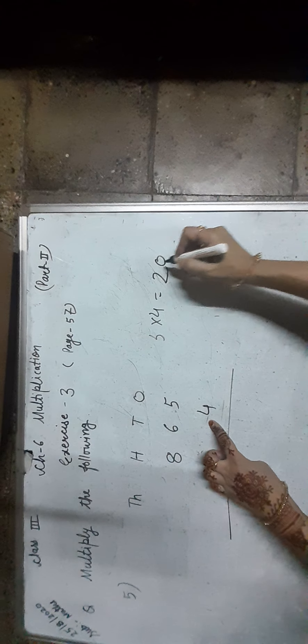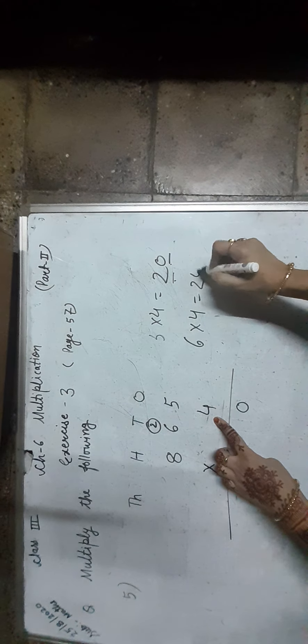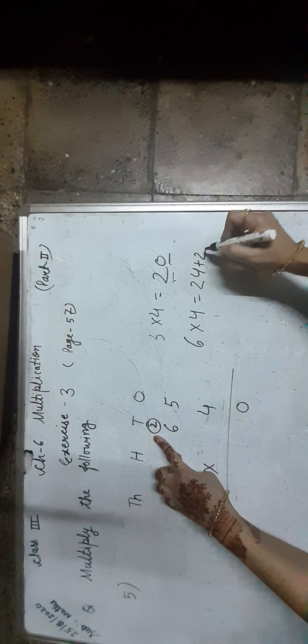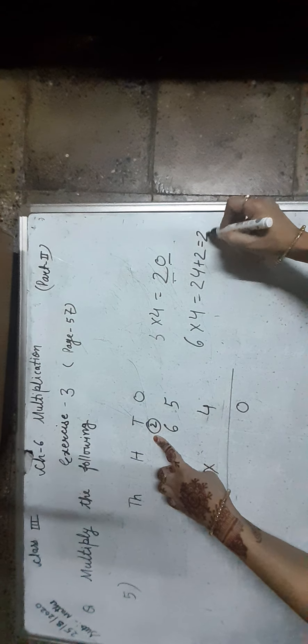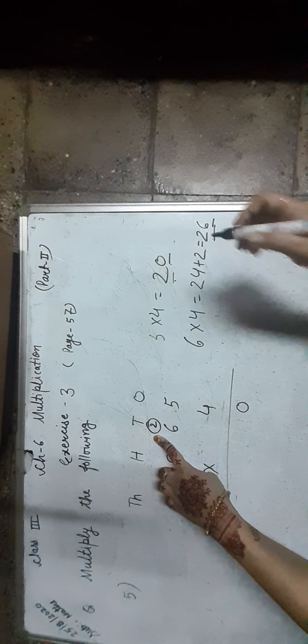Number 5: 865 is multiplied by 4. Start from the 1s place digit: 5 × 4 is equal to 20. That means 0 ones and 2 tens. We write 0 in the 1s place and carry 2 over to the 10s place. Now, 6 × 4 is equal to 24, plus 2 carry over, together 26. That is 26 tens — 6 tens and 200.